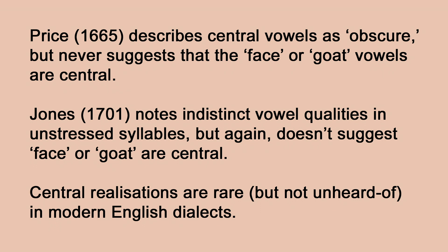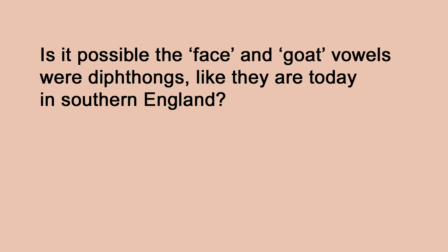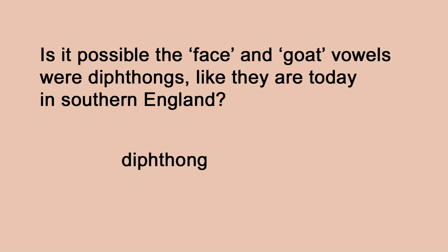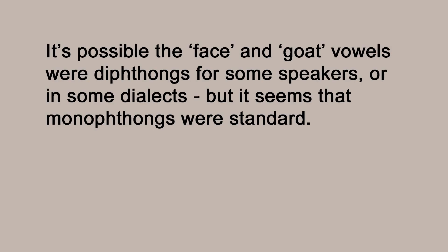So far I've been assuming these vowels were monophthongs. Is it possible they were narrow diphthongs? Monophthongal versions are really widely attested in the dialect survey, and grammarians in the 1700s could tell the difference between monophthongs and diphthongs — they consistently lump the face and goat vowels in with the monophthongs. That doesn't necessarily mean they weren't diphthongs for some speakers, but it tells us that monophthongs were considered standard. This is positive evidence that monophthongal versions did exist and were considered standard or proper.